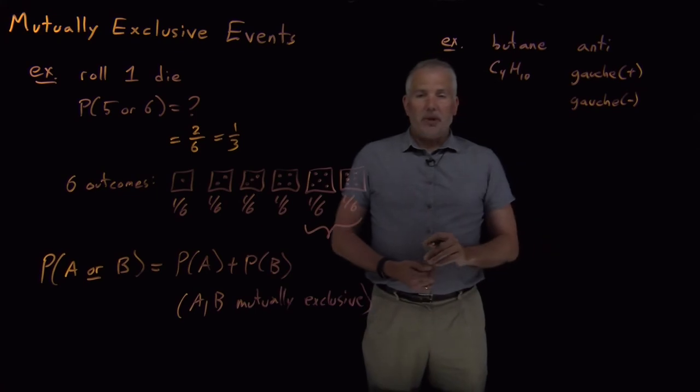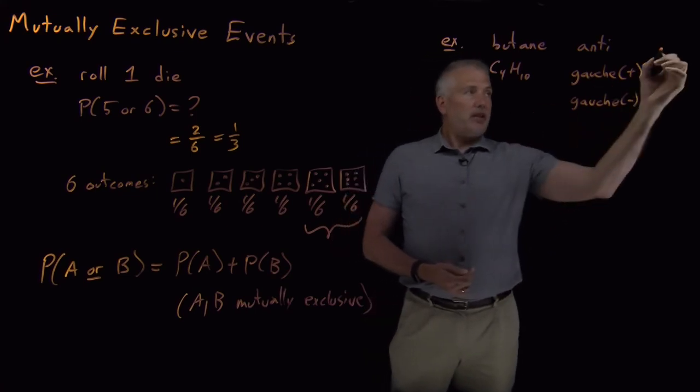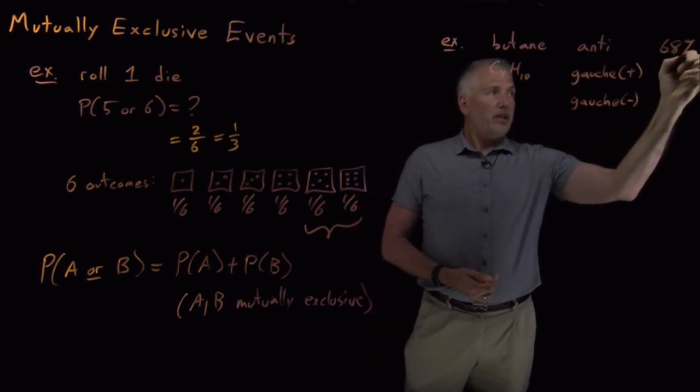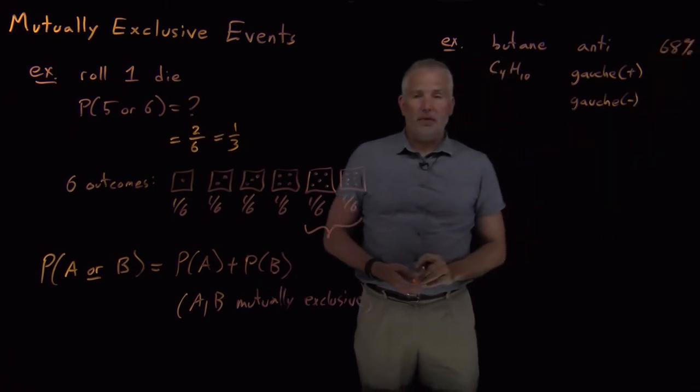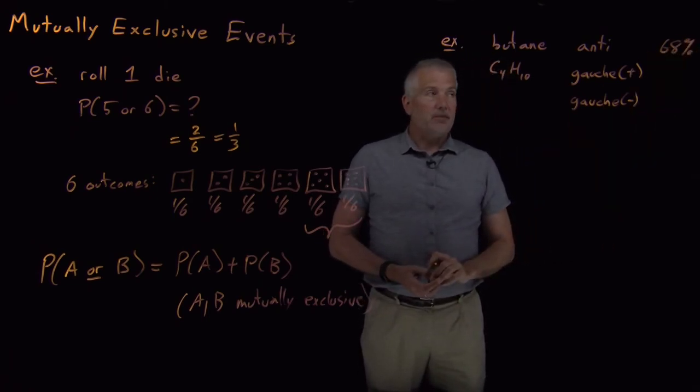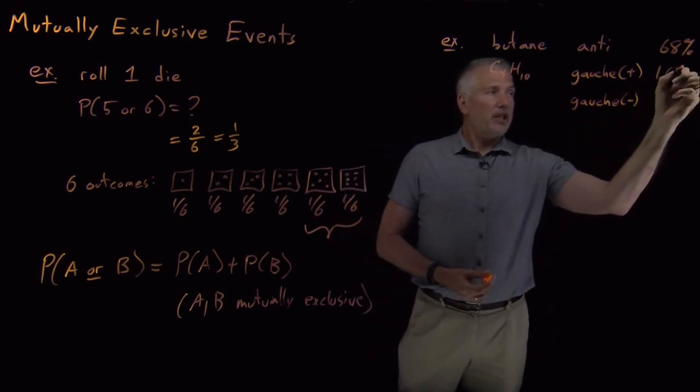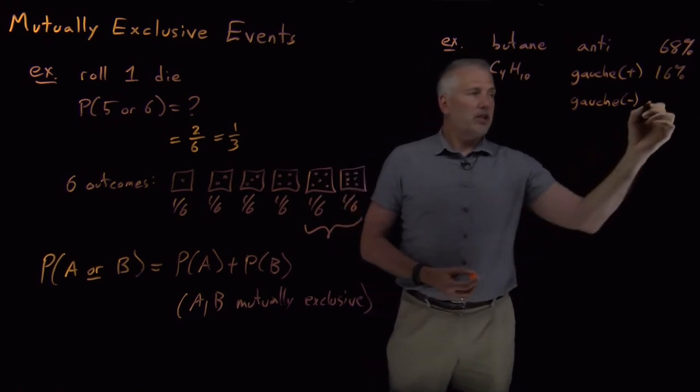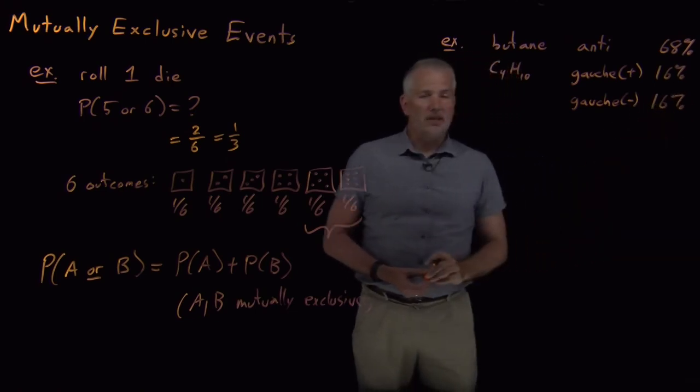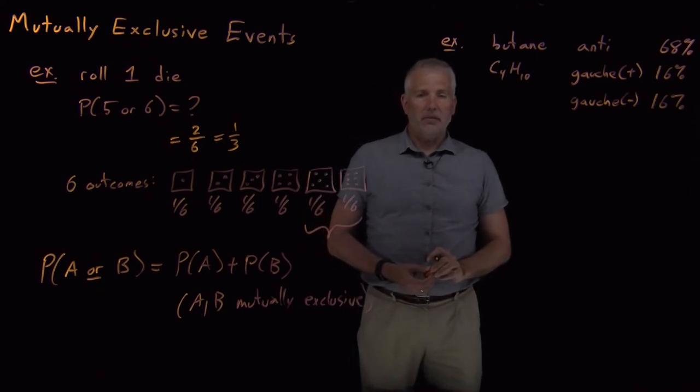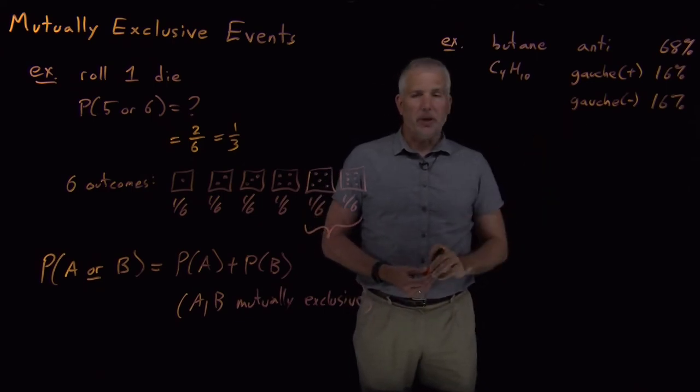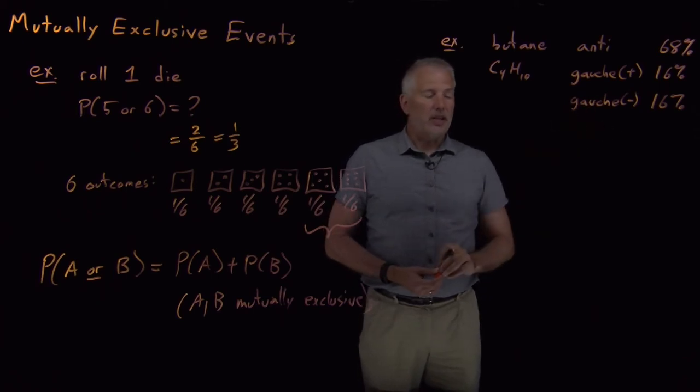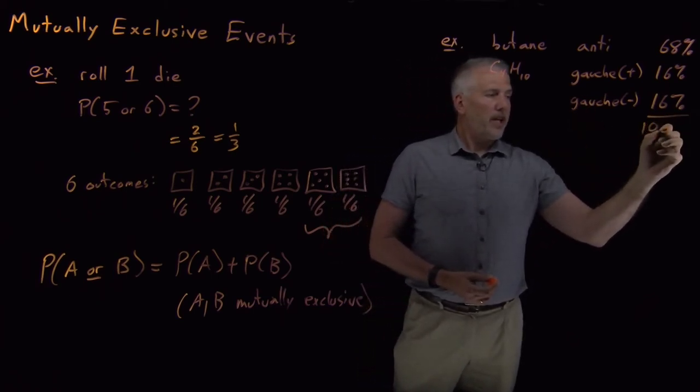If you don't remember what the conformations of butane are, that's not terribly relevant for this problem. But I'll tell you that at room temperature in the gas phase butane there's a 68% probability, 68% chance that if you grab a butane molecule out of the gas phase, it'll be in the anti-configuration, a 16% chance that it'll be in the gauche plus conformation and a 16% chance that it's in the gauche minus conformation. We can just treat those as experimental numbers.